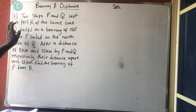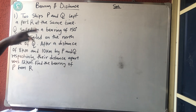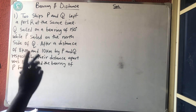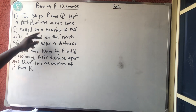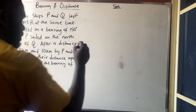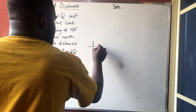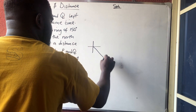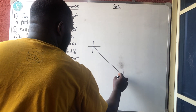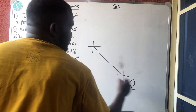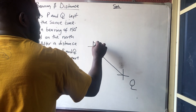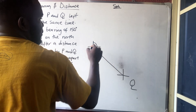Both ships left the same port at the same time. Note that Q sailed on a bearing of 150°. Since 150 is in the second quadrant, I will draw it on this side so that 150 will fall in the second quadrant. This line represents Q, and starting from the north, this angle here is my 150°.